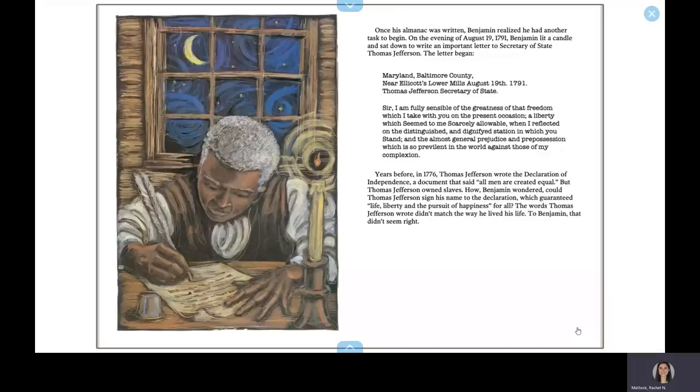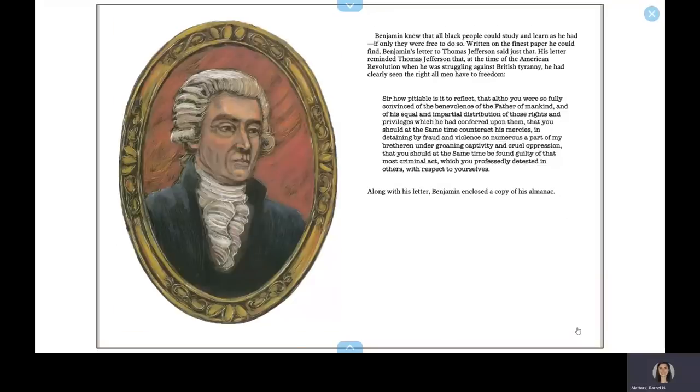Years before, in 1776, Thomas Jefferson wrote the Declaration of Independence, a document that said all men are created equal, but Thomas Jefferson owned slaves. How, Benjamin wondered, could Thomas Jefferson sign his name to the Declaration, which guaranteed life, liberty, and the pursuit of happiness for all? The words Thomas Jefferson wrote didn't match the way he lived his life. To Benjamin, that didn't seem right.